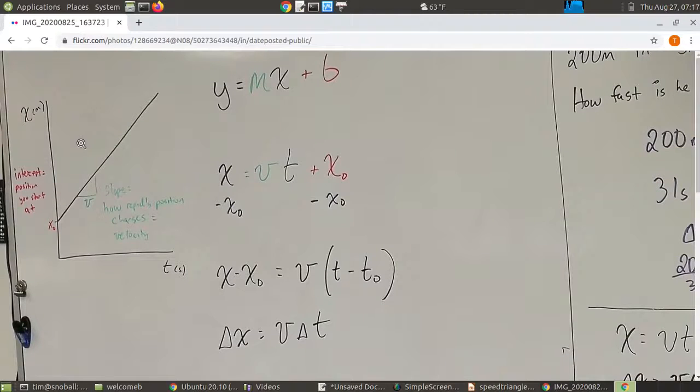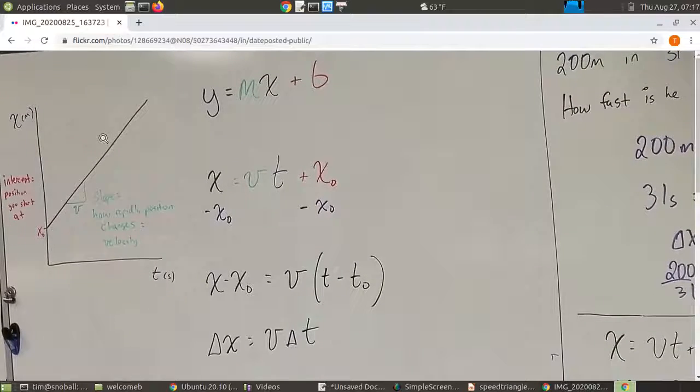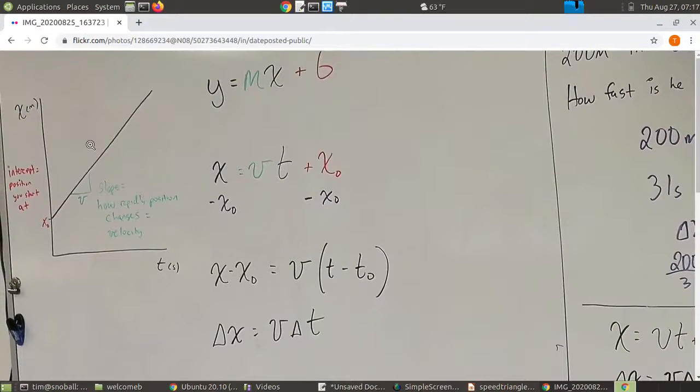It's a model of a straight line. Both of these equations only work if we have a constant slope on our x versus t graph. In other words, if we are going constant speed.